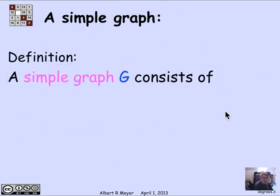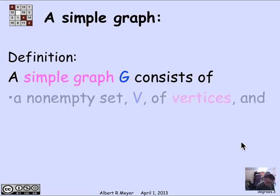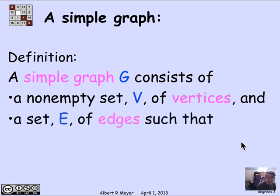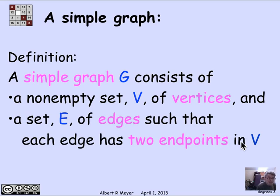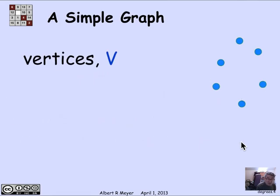The formal definition of a simple graph is that it's an object G that has a non-empty set V of vertices, just like directed graphs. And it has a set E of edges. But the edges now are somewhat different since they don't have beginnings and ends. An edge just has two endpoints that are in V, and we don't distinguish the endpoints.